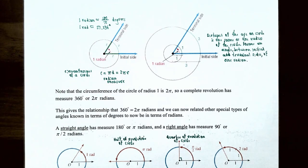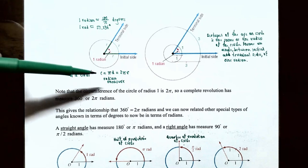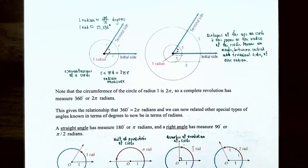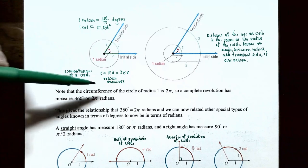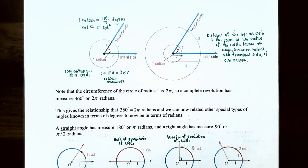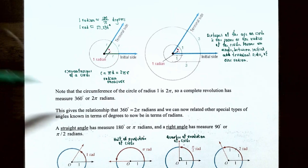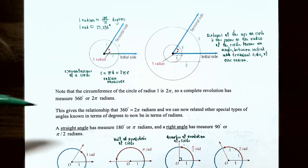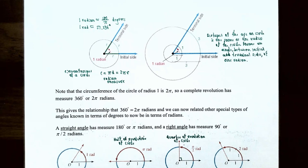Notice that the circumference of a circle with radius 1 is 2 pi, because the formula for circumference is 2 times pi times radius. So one complete revolution is 2 pi radians, or if you convert to degrees, one revolution counterclockwise is 360 degrees. This gives the relationship that 360 degrees is equivalent to 2 pi radians, allowing us to relate special angle types in both degrees and radians.